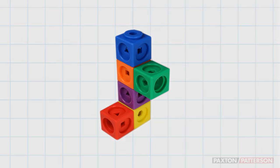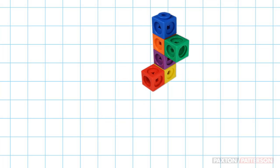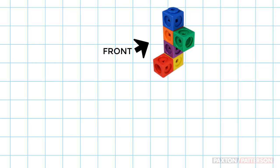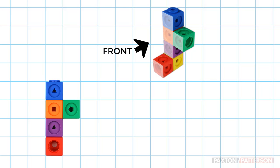Graph paper is helpful to draw the different views. From this perspective, here is the front of the object. It looks like this. For the front view, I'll draw four blocks up and the green block on the side.